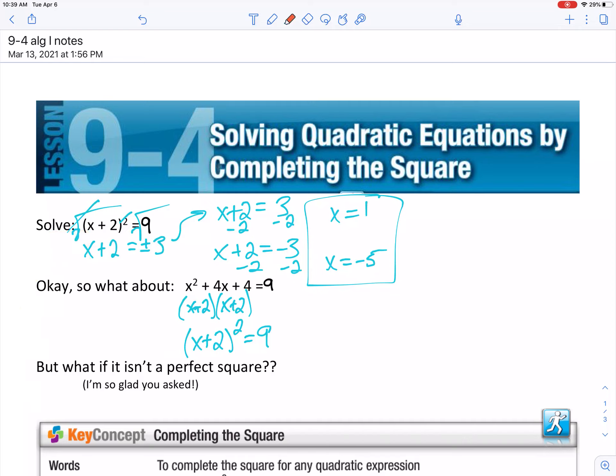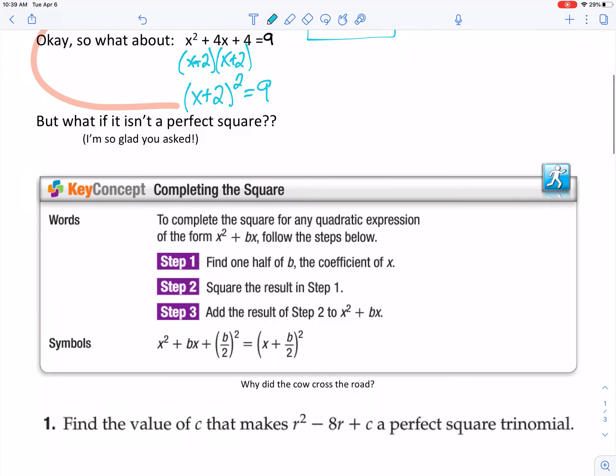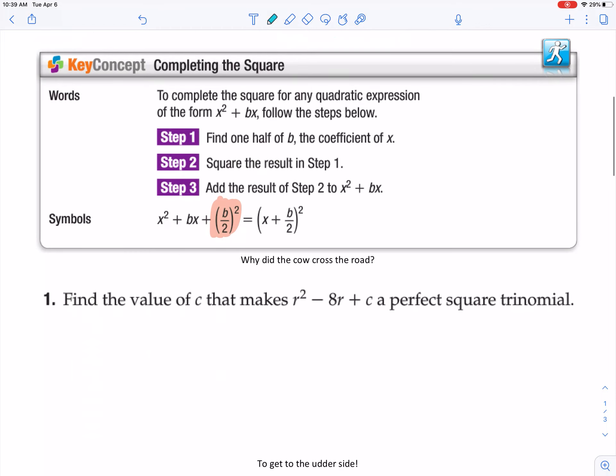But what if it's not a perfect square trinomial? Well, I am so glad you asked. Let me explain. You're going to what we call complete the square or completing the square. By the way, you're going to want to write this down. This is your new best friend. This little formula right here: b over 2 quantity squared. Here's how you figure out how to complete the square. Use that formula. We're just going to practice finding that number real quick.